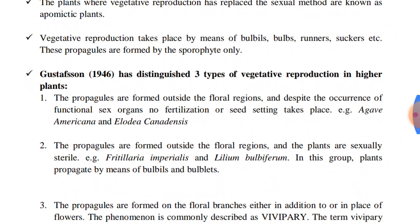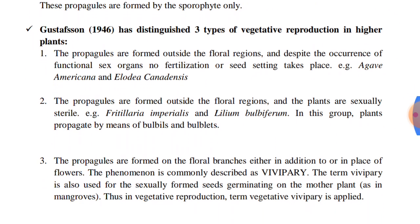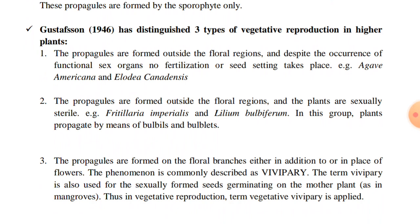Gustafson has distinguished three types of vegetative reproduction in higher plants. Number 1: the propagules are formed outside the floral regions and despite occurrence of functional sex organs, no fertilization or seed setting takes place. That is, the sex organs are functional but fertilization does not take place and vegetative propagules are formed outside the floral regions. For example, Agave americana and Elodea canadensis.